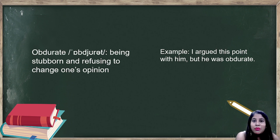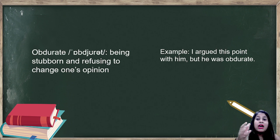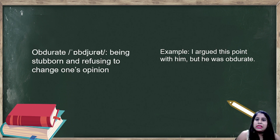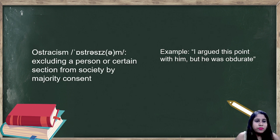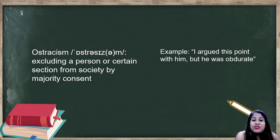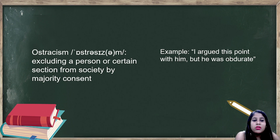Example: I argued this point with him but he was obdurate — he was very firm, a real example of what obdurate means. Next word is 'ostracism.' Ostracism means excluding a person or a certain section from society by majority consent.